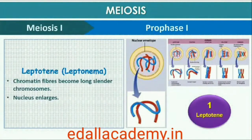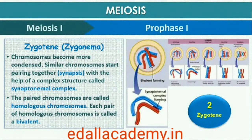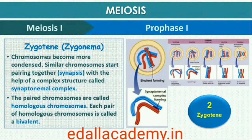During the leptotene stage, the chromosomes become gradually visible under the light microscope and the compaction of chromosomes continues throughout leptotene. This is followed by the second stage of prophase I called zygotene. During this stage, chromosomes start pairing together and this process of association is called synapsis. Such paired chromosomes are called homologous chromosomes. Electron micrographs indicate that chromosome synapsis is accompanied by the formation of a complex structure called the synaptonemal complex. The complex formed by a pair of synapsed homologous chromosomes is called a bivalent or a tetrad.